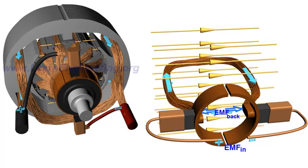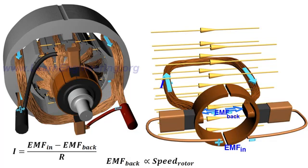The back EMF reduces armature current by a large amount. Back EMF is proportional to the speed of the rotor.